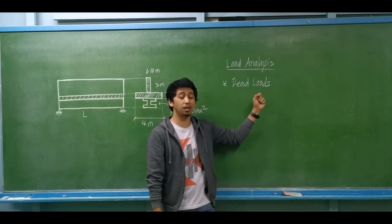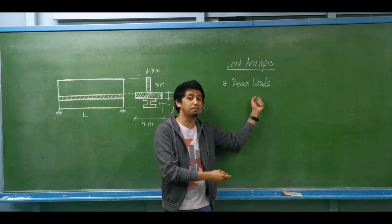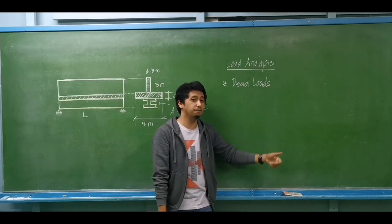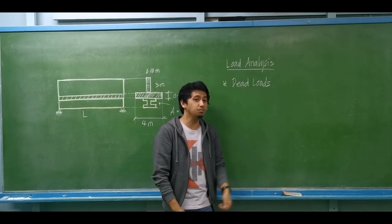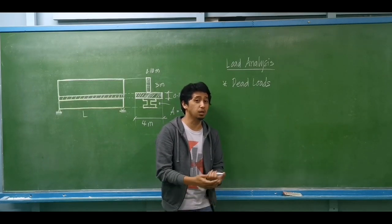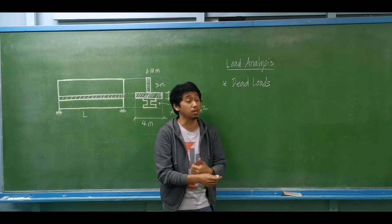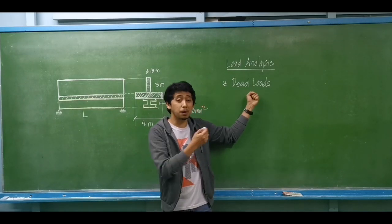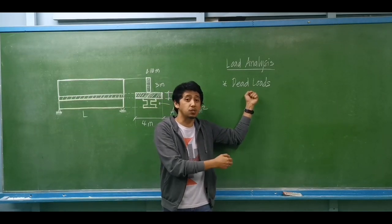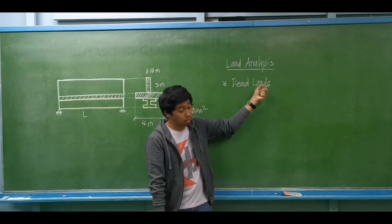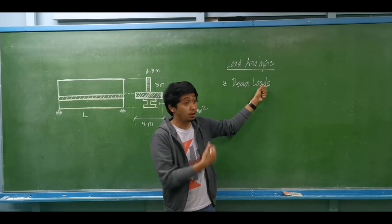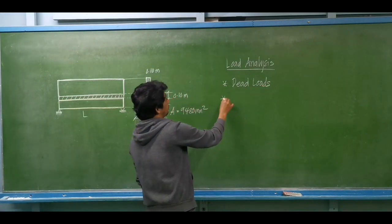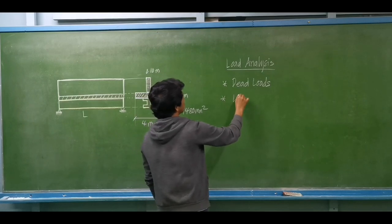Most of the time, they are structural members. If we say structural members, we have columns, beams, roofing, trusses, and so on. Anything that is permanent or fixed in that structure — those are the dead loads. Then we have live loads.